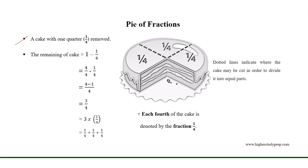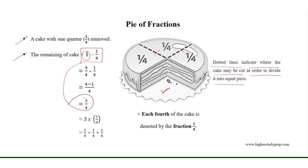A cake with 1 quarter or 1 fourth removed. The dotted lines indicate how the cake may be cut in order to divide it into equal parts. Anything whole represents 1. Therefore, the remaining portion of the cake is equal to 1 minus 1 over 4, which results in 3 over 4 or 3 fourths. Therefore, each fourth of the cake is denoted by the fraction 1 over 4.